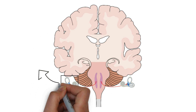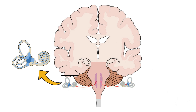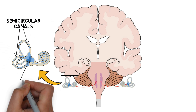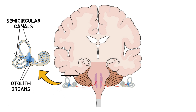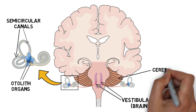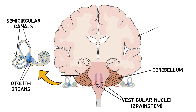Our sense of stability is maintained primarily by the activity of the vestibular system, which includes the semicircular canals and otolith organs of the inner ear, as well as the vestibular nuclei in the brain stem. The inner ear structures receive information about head movement and communicate this information to other brain regions, including the brain stem, cerebellum, and cerebral cortex.